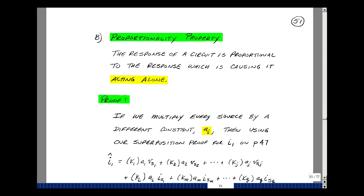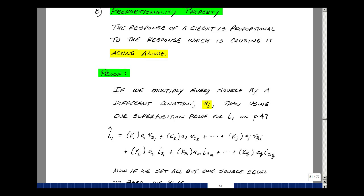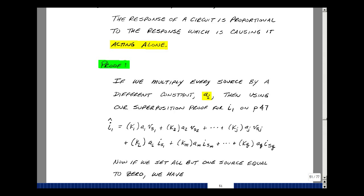Let me explain this through the proof. Suppose that we take our last result in the superposition proof on page 47, and let's take each source and multiply it by a scalar. I'll call this A1, A2, through A sub j, and all the way through A sub q. So the value of our current now is different than what we had before.